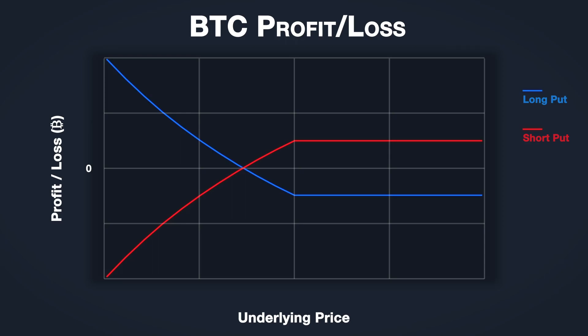For put options, this happens when the underlying price is above the strike price at expiry. However, as price decreases, as you can probably tell just from this visual by noticing the increasing steepness of these payoff lines, the maximum profit in Bitcoin of the buyer is unlimited. Similarly, the maximum loss in Bitcoin for the seller is also unlimited.